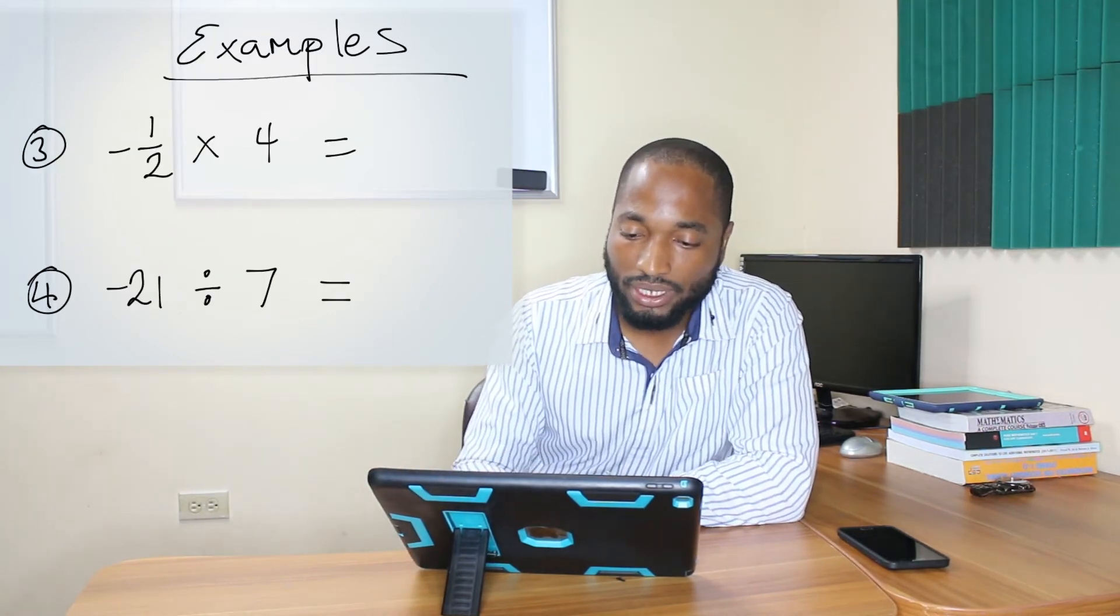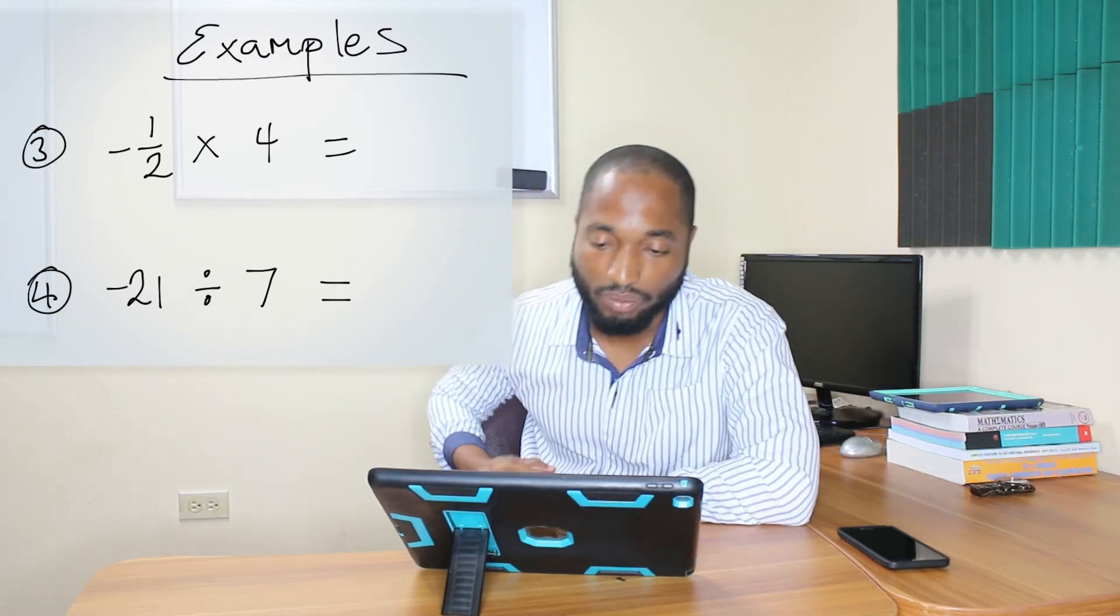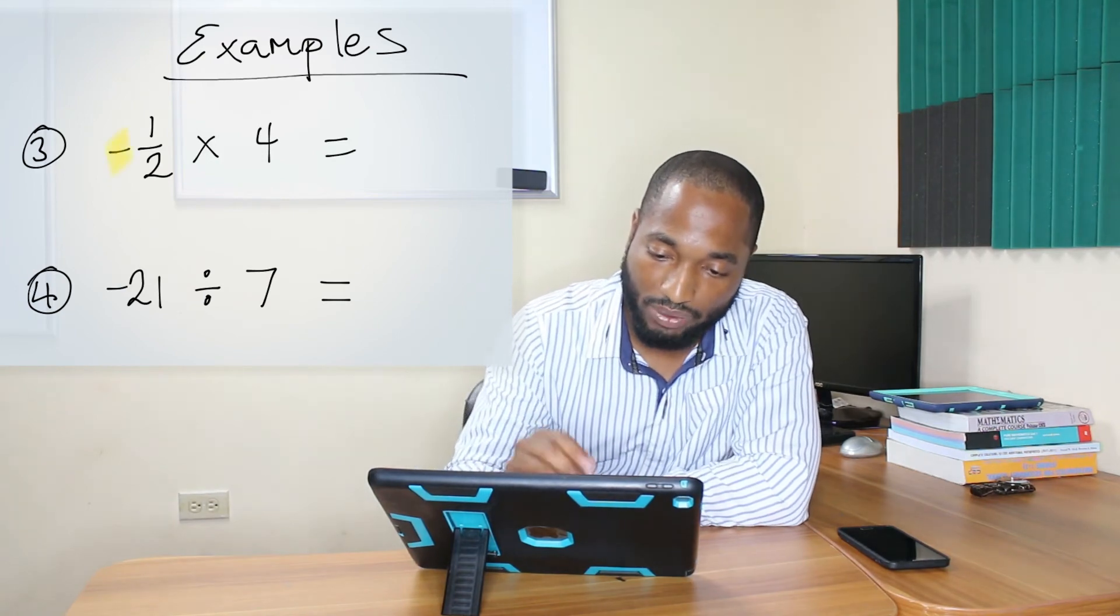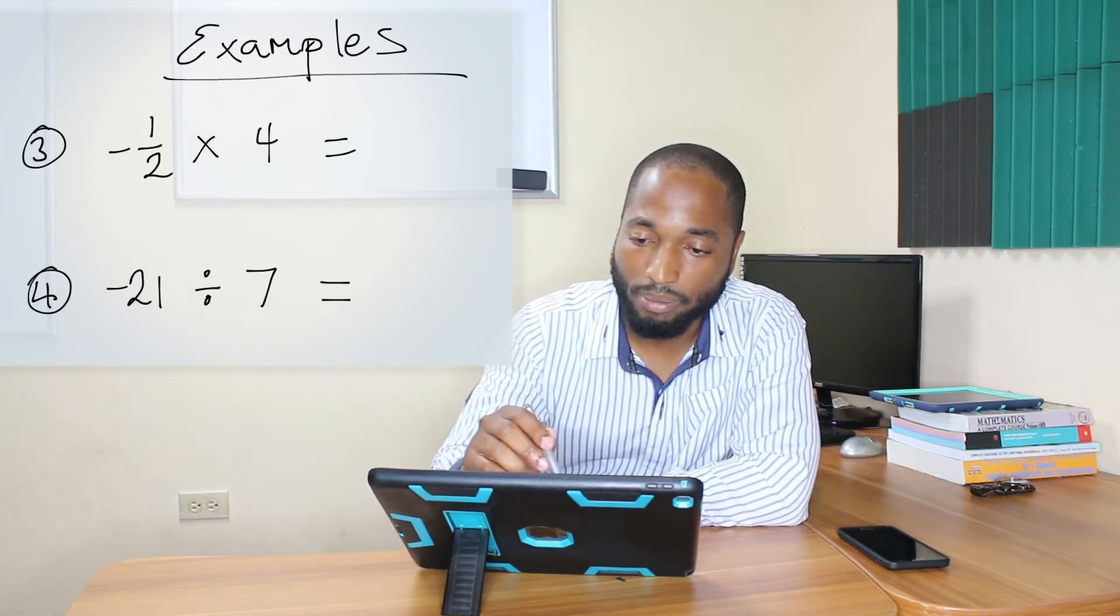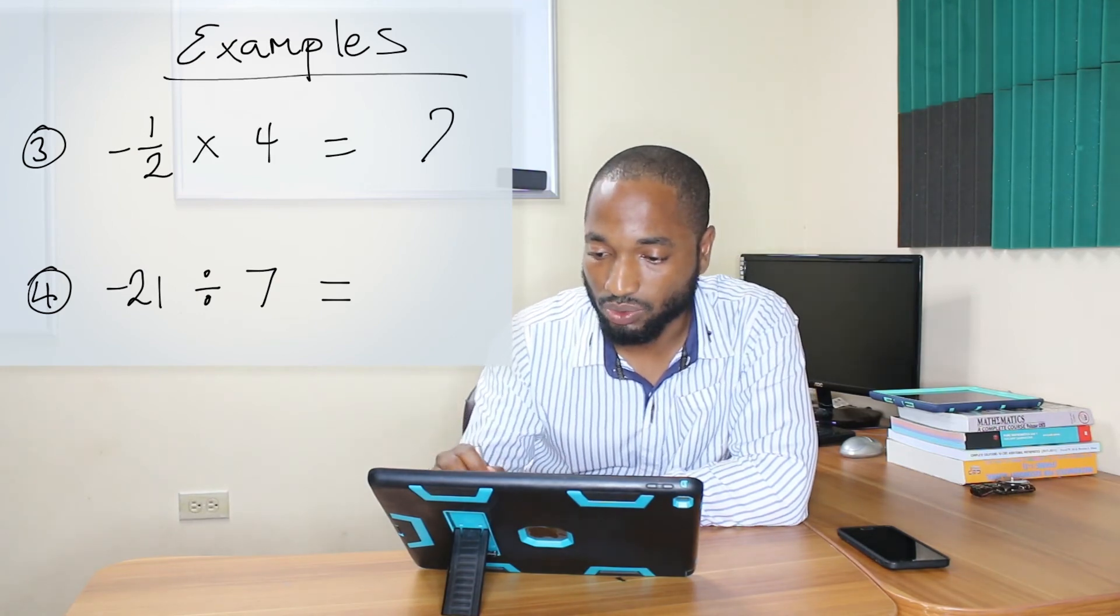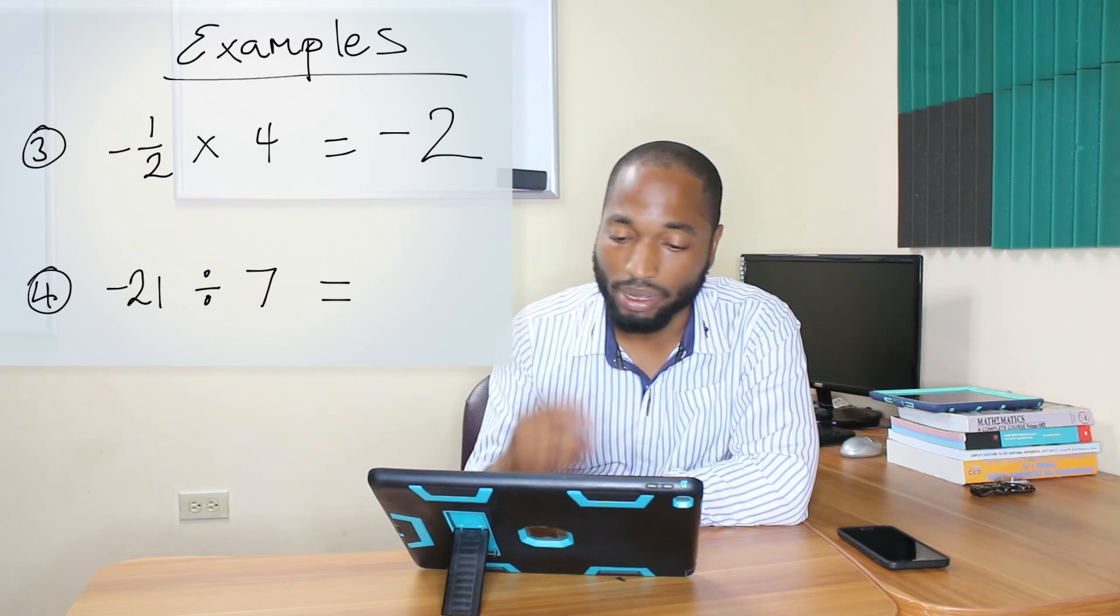Last two examples and we'll call that George. Negative a half multiplied by 4. Once again, we see a negative sign and we see no sign which means it's positive. So negative by positive, the answer is 2 and the answer must be negative according to the table. You can go back and check the table.